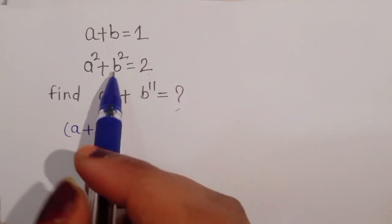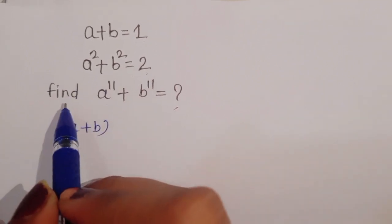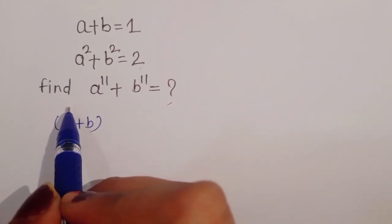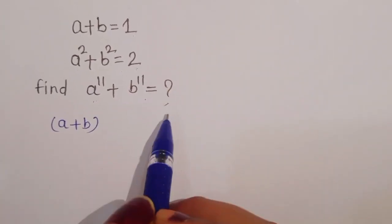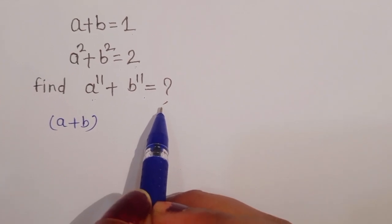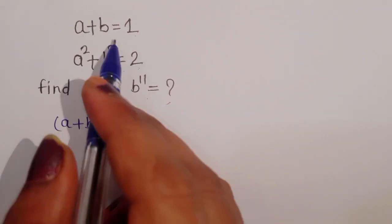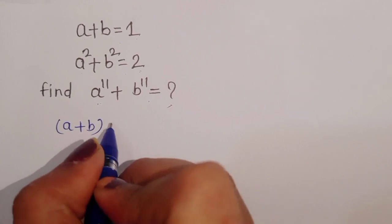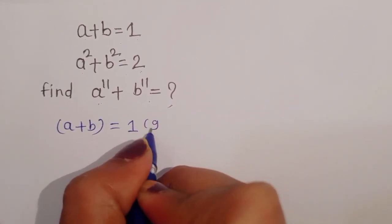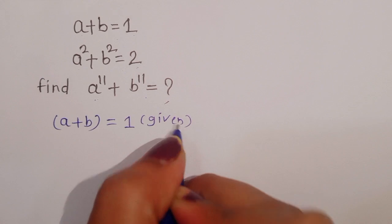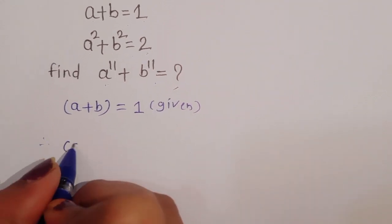a plus b is equal to 1 and a squared plus b squared is equal to 2. We have to find out the value of a power 11 plus b power 11. First we have to see what is given: a plus b is equal to 1.